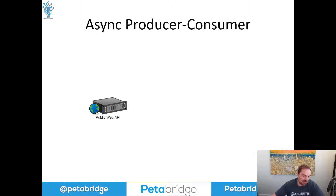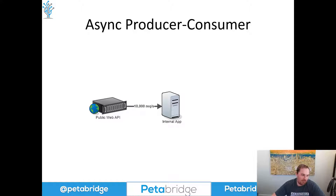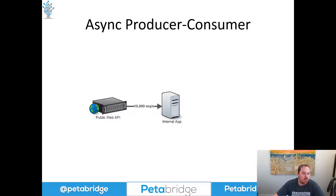This isn't an Akka.NET-specific problem — this is an asynchronous producer-consumer pattern problem. Let's take the example of a public web API that's subject to a large amount of traffic. Some of that traffic gets diverted to an internal application that performs some bespoke business domain-specific code, and let's say that internal application is receiving roughly 10,000 requests per second. Imagine it talks to a SQL database or maybe a NoSQL database like Mongo.